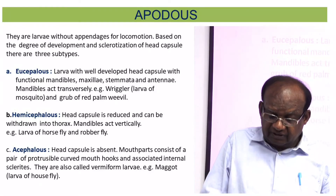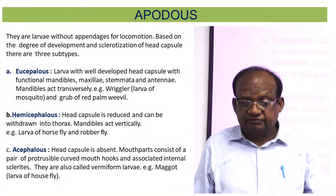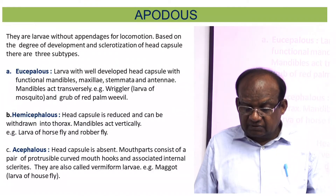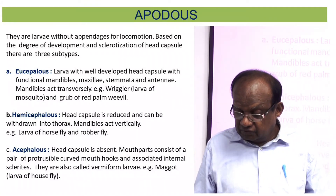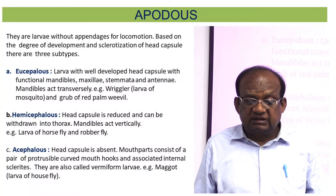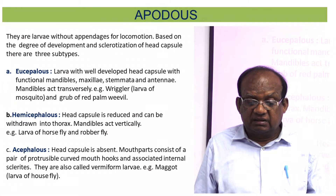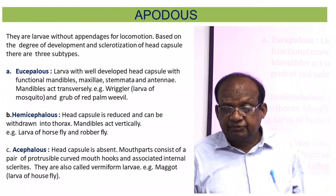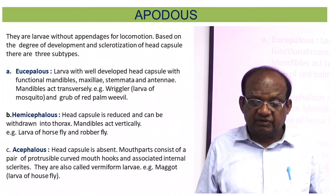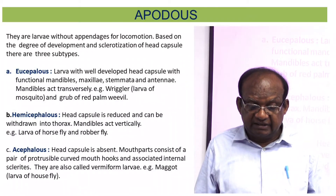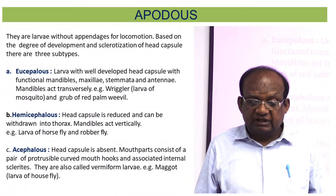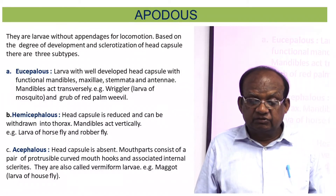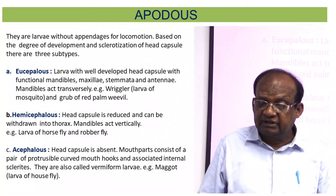Another group of larvae is called apodous larvae. Apodous means larvae that have no pods — no legs. Based on the degree of development and sclerotization of head capsules, apodous larvae can be grouped into three categories.